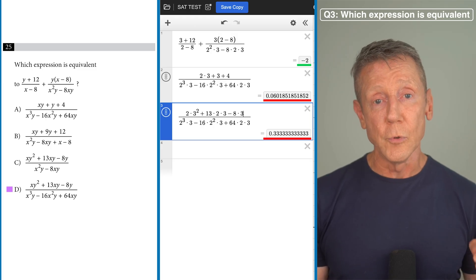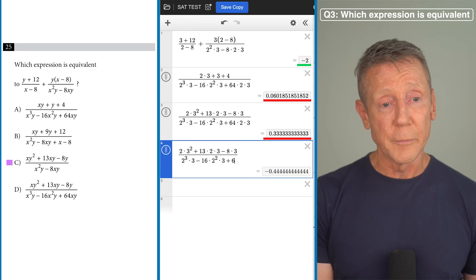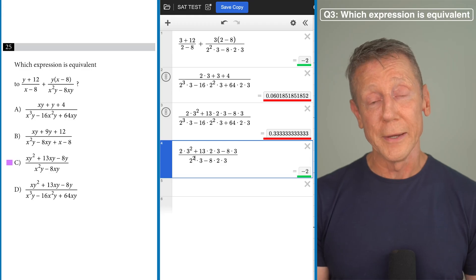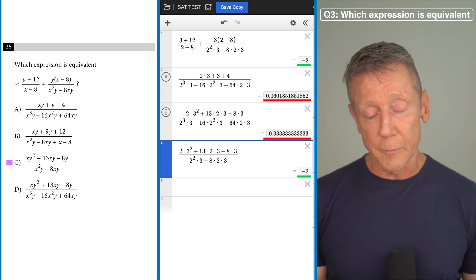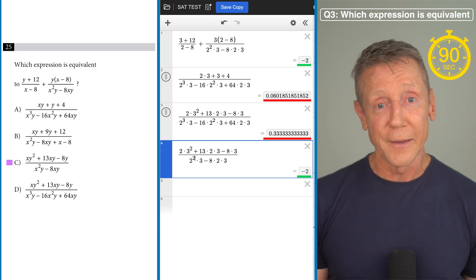So the third one now has the same numerator as this fourth one so I'm going to duplicate the fourth one and edit the denominator and here we go and we get the right answer. So at this point I'm not going to bother typing in the second one. We already got the right answer and notice we did it in under 90 seconds.